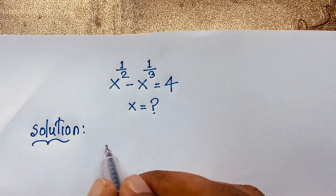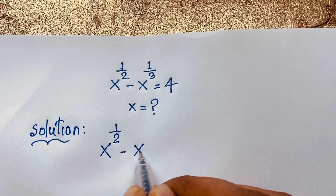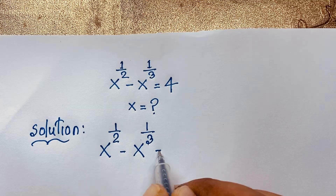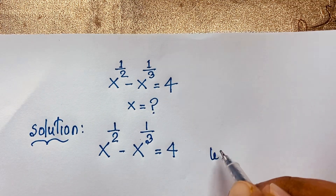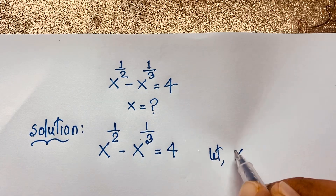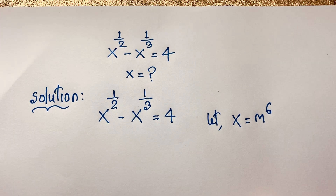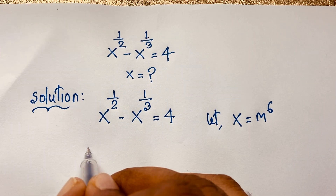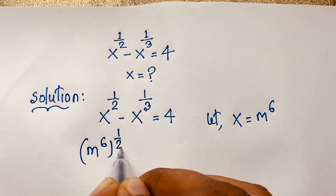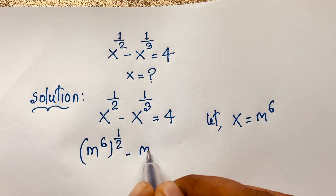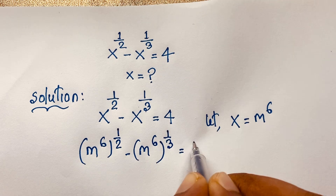Our question is x to the power half minus x to the power 1 over 3 is equal to 4. Both are x, so let x equal m to the power 6. So we will let x equal to m to the power 6. This expression will be m to the power 6 bracket power 1 over 2, minus m to the power 6 bracket power 1 over 3, is equal to 4.